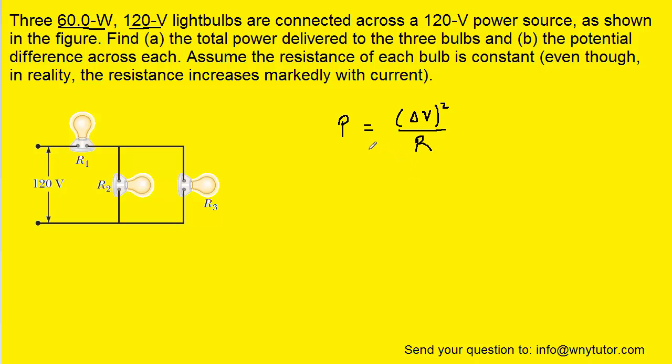And to do that, we recall that power is equal to the potential difference squared divided by the resistance. Let's solve this equation for resistance. We'll multiply both sides of the equation by R, and then divide both sides of the equation by P.